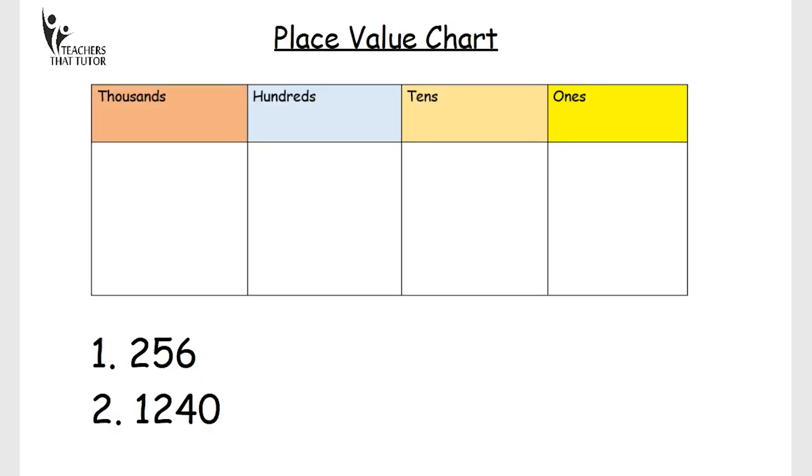So first of all, it's likely that your child will look at something like this. This is called a place value chart and it helps the children to understand the values of the digits in each of their numbers. So if a number has three digits, two, five and six, then we know that the two would represent the hundreds, the five would represent the tens and the six would represent the ones.